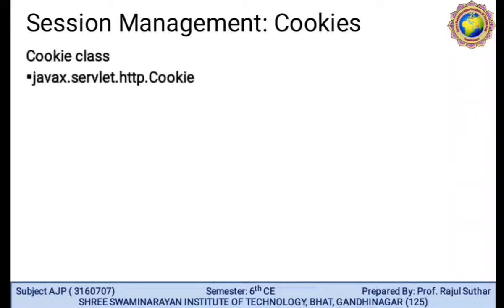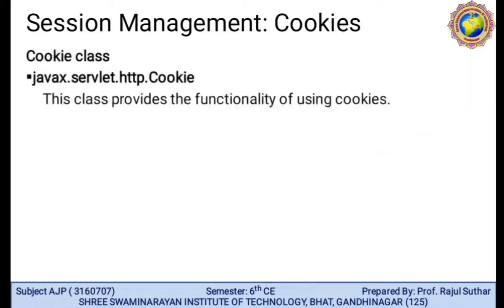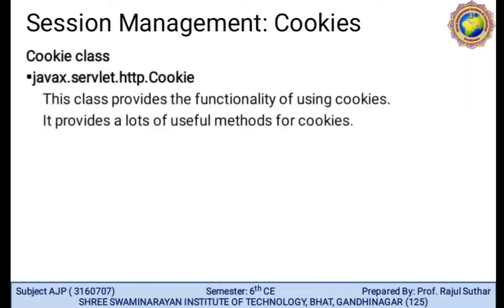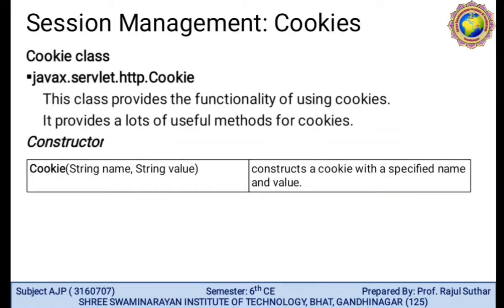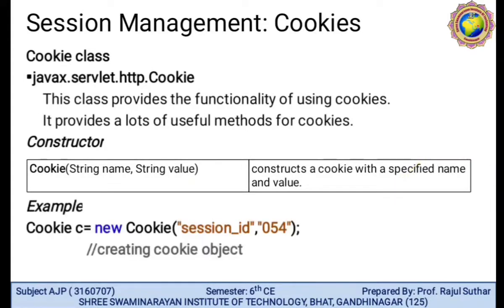Cookie class: the first class used is javax.servlet.http.Cookie. This class provides the functionality of using cookies and provides lots of useful methods for cookies. The constructor is Cookie(String name, String value). For example: Cookie c = new Cookie("session_id", "054"). This creates a cookie object with a specified name and value.